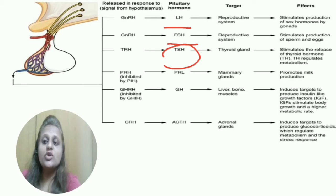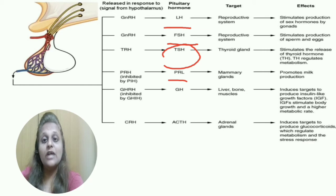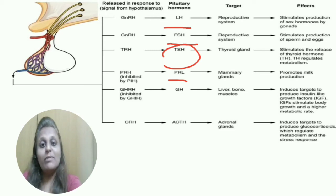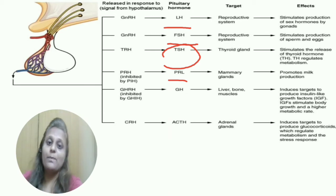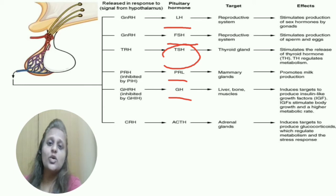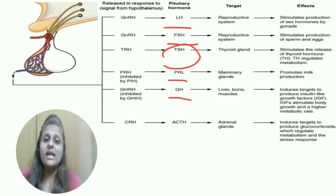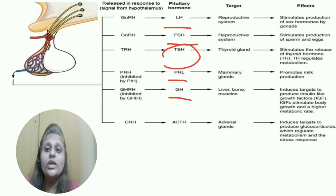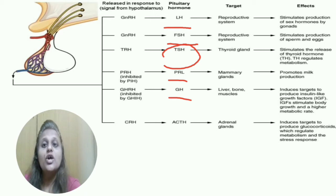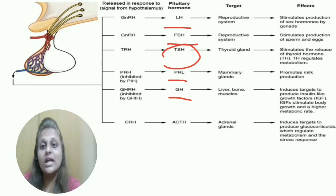PRL, the prolactin hormone, affects the mammary gland. Its effect is that in females, after the birth of a baby, it is responsible for milk production. GH, the growth hormone, is very important for everyone — without it, our normal height is affected. GH is responsible for body growth, including height and cell growth.